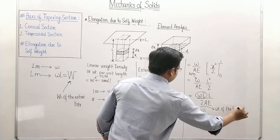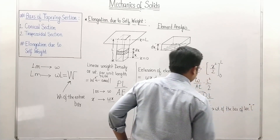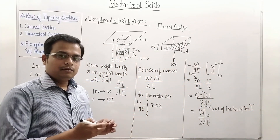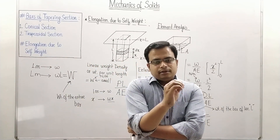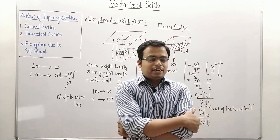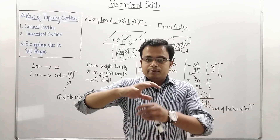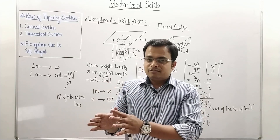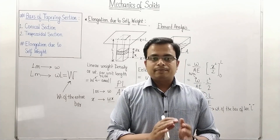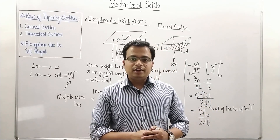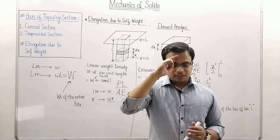This result can also be written as δl = WL/(2AE), where W = wL is the total weight of the bar. That's all for today. In the next sessions, we'll take on subjective and objective problems on simple stress and strains. Take care, keep learning!